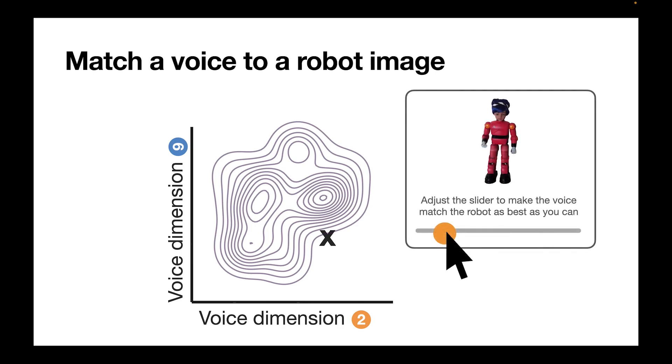And they can only change one voice dimension at a time. The same slider is presented to five different participants. And the median response propagates to the next iteration. We repeat this procedure many times until we converge to a matched voice.